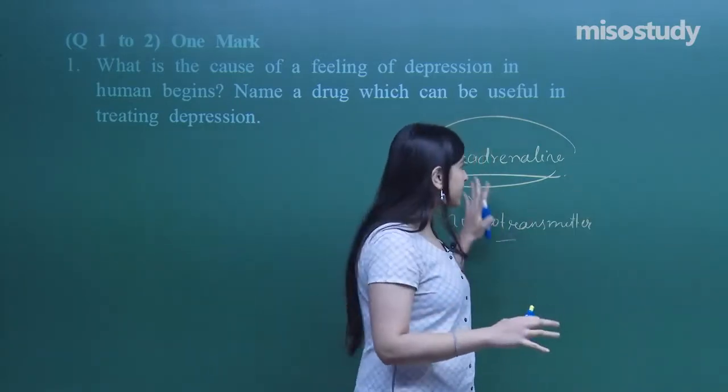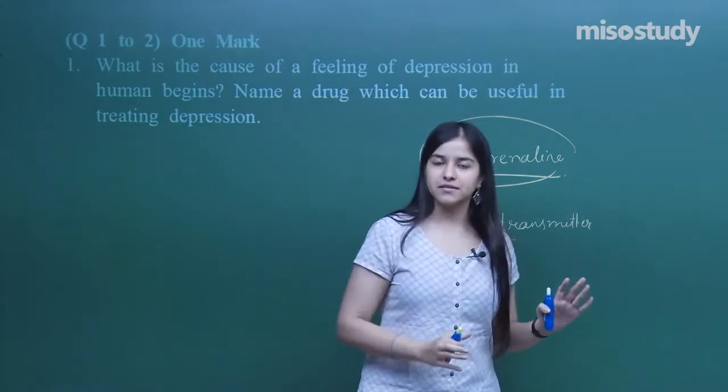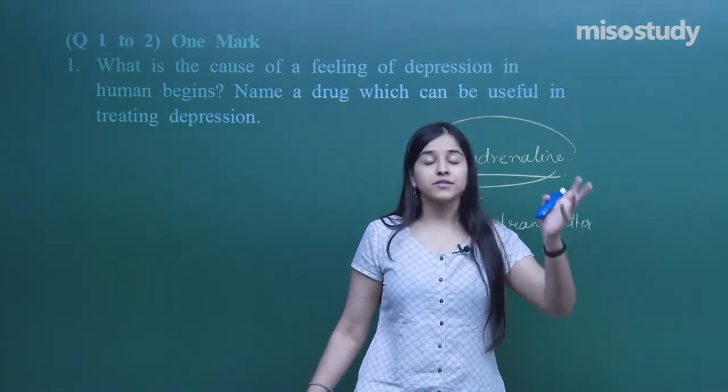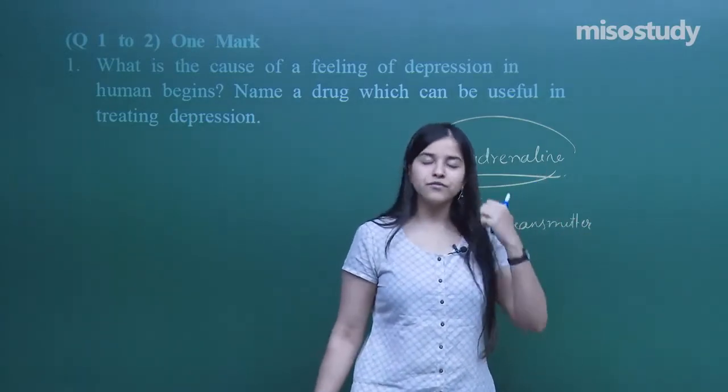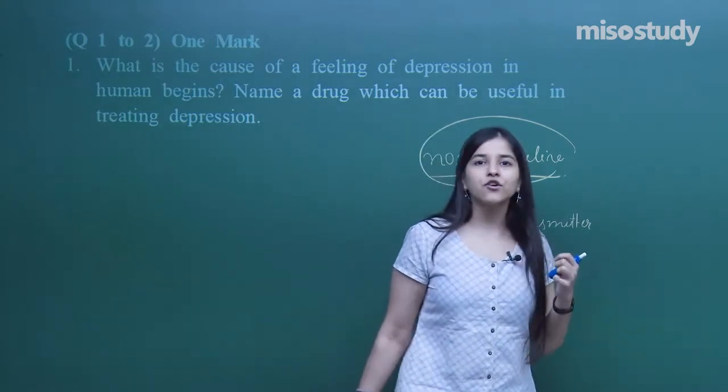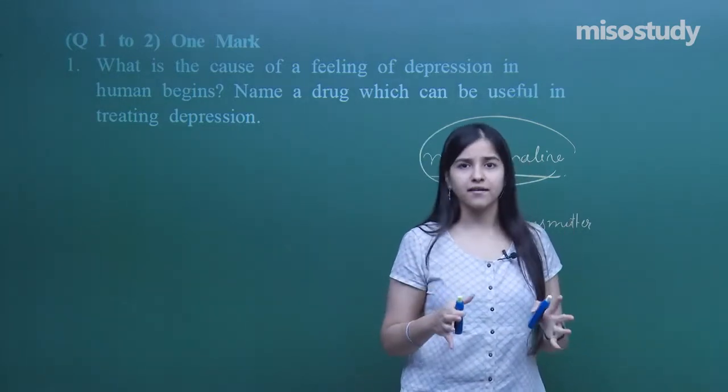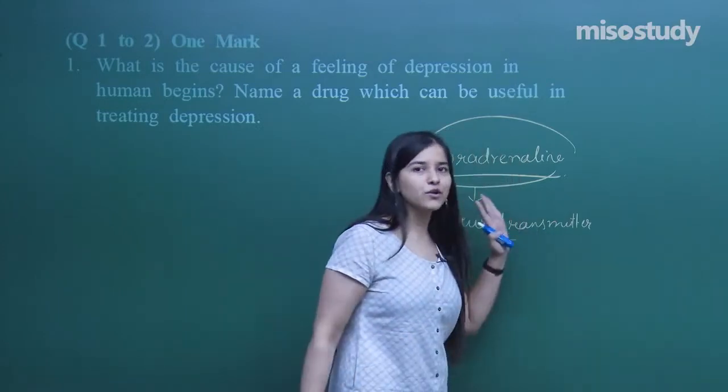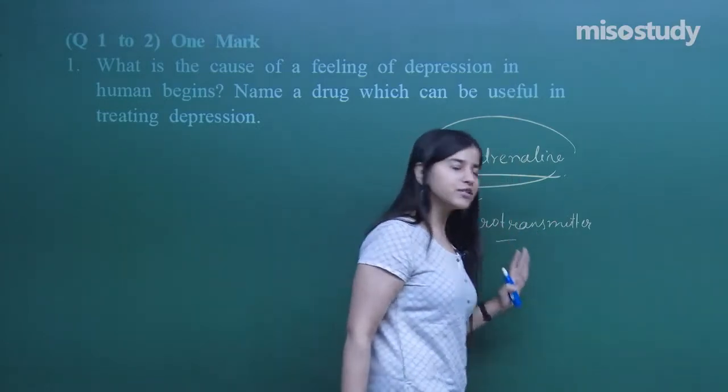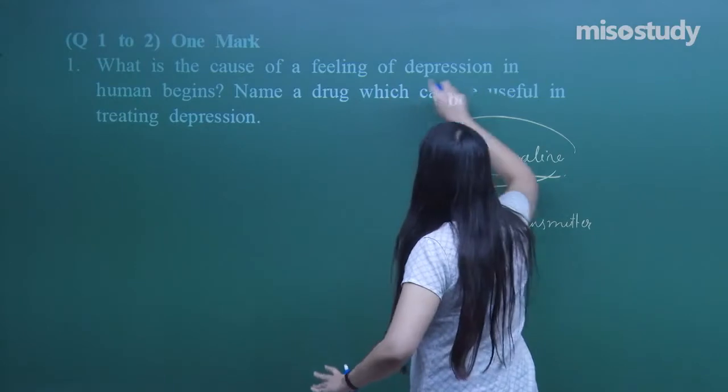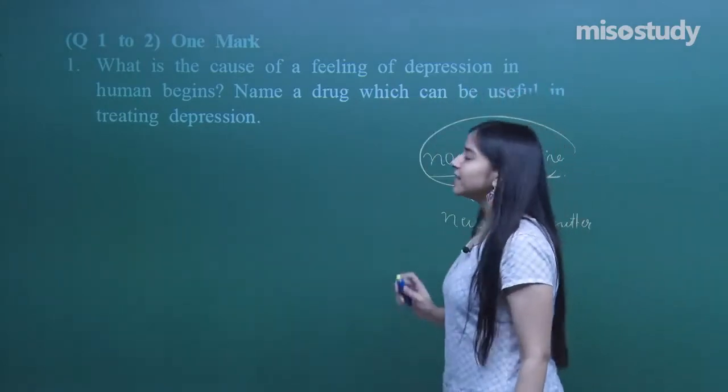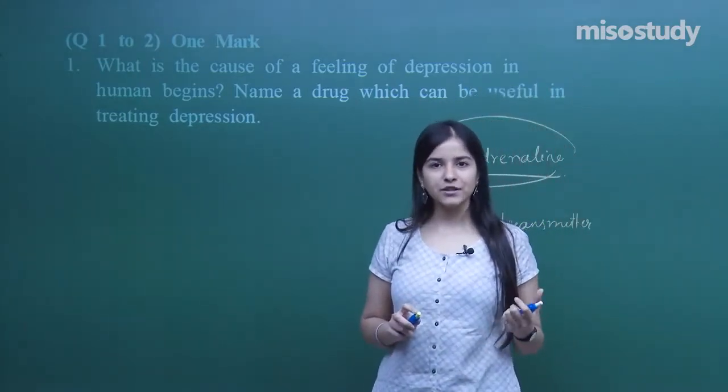It's a neurotransmitter that I am talking about, noradrenaline. This particular neurotransmitter if released in proper amounts will regulate our mood. If it's not released in proper amounts, we get depression. The signal transmission process becomes really slow and we feel sad.